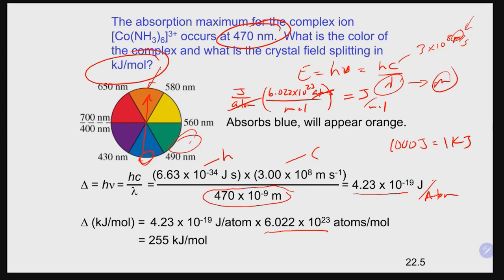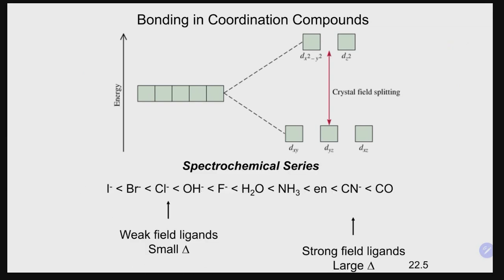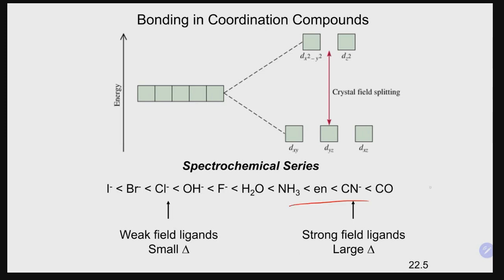To determine the magnitude of the splitting, we use the spectrochemical series — a ranking of ligands from weak field to strong field. Strong field ligands produce a large crystal field splitting, causing electrons to fill the lower d orbitals first. In octahedral complexes, we look at the three lower versus two upper d orbitals to understand how electrons fill based on ligand field strength.